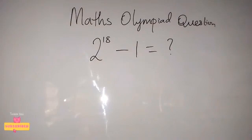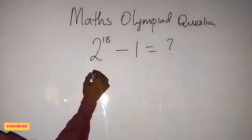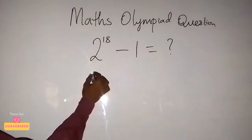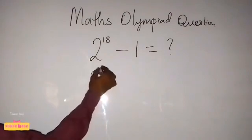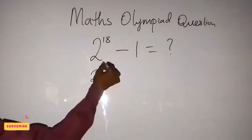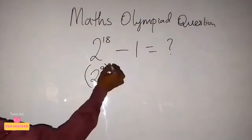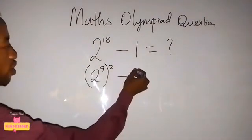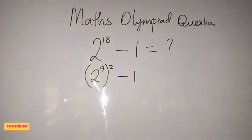Now, when solving this, we look at it this way. We can write this 2 raised to power 18 as 2 raised to power 9, then all raised to power 2, minus 1. That will give us this.